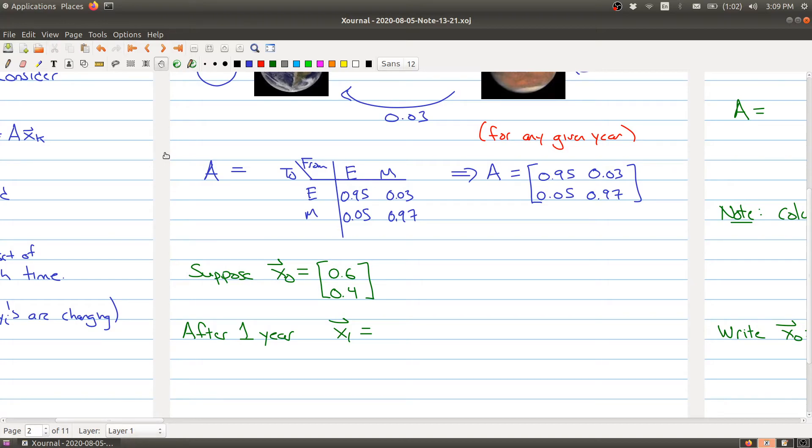Let's say our initial vector is [0.6, 0.4]. How do we interpret this? In the first entry, we put the percentage of the population on Earth—60% is on Earth. 40% is on Mars when we start tracking. This is our initial state. What we want to know is the percentage after one year if we allow people to hop on their spaceship and move between planets. We can use our matrix to calculate the percentage at any given time.